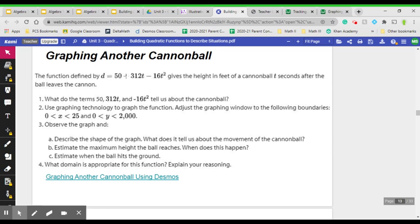Continuing with our lesson, we have another cannonball example here where we have a function, which is d equals 50 plus 312t minus 16t squared. And that's t seconds after the ball is leaving the cannon. So first, think about the example we just did. We want to establish what does the 50 mean, what does the 312t mean, and what is negative 16t squared.